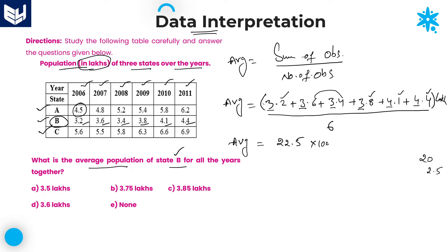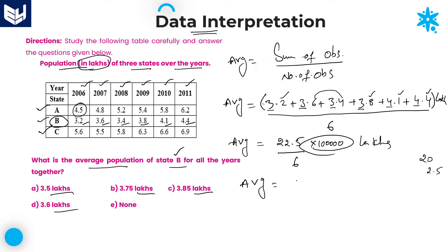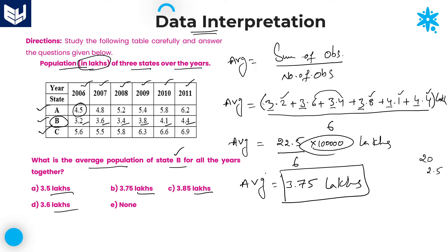22.5 into 1 lakh. Guys, if you observe carefully, the options are given in terms of lakhs, so there is no need of multiplying with lakhs — directly you can write lakhs itself. So 22.5 divided by 6. Here 6 times 3 is 18, still 4 is left over. Then 3.75: 6 times 7 is 42, still 3 left over — 30; 6 times 5 is 30. Therefore, average is equal to 3.75 lakhs. That is the required average of state B. Option B is the right answer.